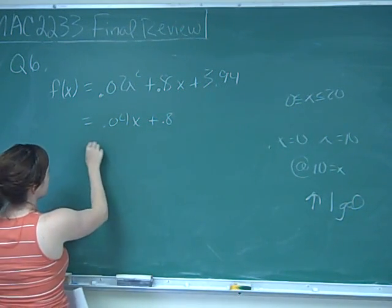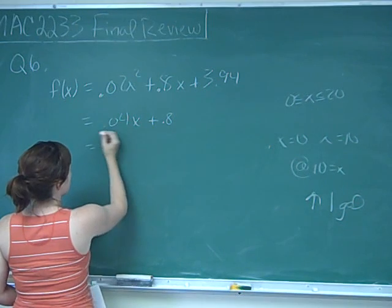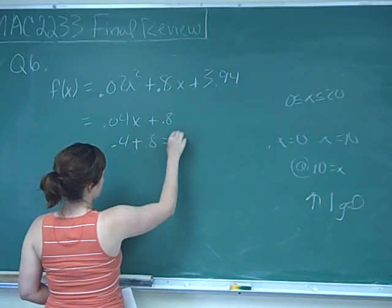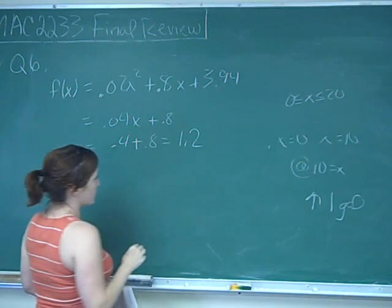At 10, that's going to be 0.04 is just 0.4 plus 0.8, which is equal to 1.2.